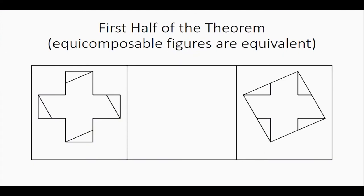So this is half of the theorem — a demonstration of how we can use it. If two figures are made up by the same pieces, then the figures have the same area. But what about the reverse? If two figures have the same area, can we cut them into a finite number of pieces so they can be reassembled one into another? That's what we're going to prove next.